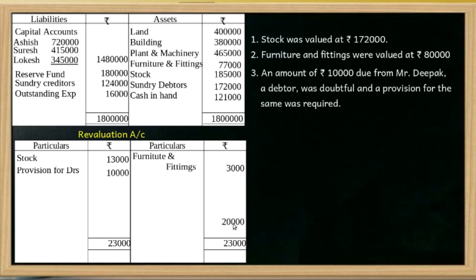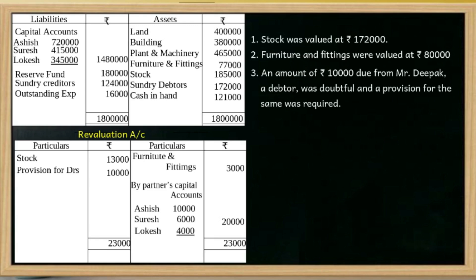Revaluation results in a loss, distributed among all partners including the retiring partner. The profit sharing ratio is 5:3:2, so the total revaluation loss of Rs. 25,000 is shared as: Ashish gets Rs. 10,000 (5/10 × 25,000), Suresh gets Rs. 6,000 (3/10 × 25,000), and Logesh gets Rs. 4,000 (2/10 × 25,000).